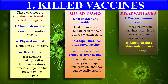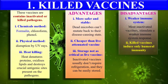These killed vaccines only develop humoral immunity, meaning immunity due to body fluids. They do not provide cellular immunity or cell-mediated immunity. As discussed under the properties of an ideal vaccine, an ideal vaccine should induce both humoral as well as cellular immunity. But killed vaccines are only inducing humoral immunity, so this is also a disadvantage of killed vaccines.